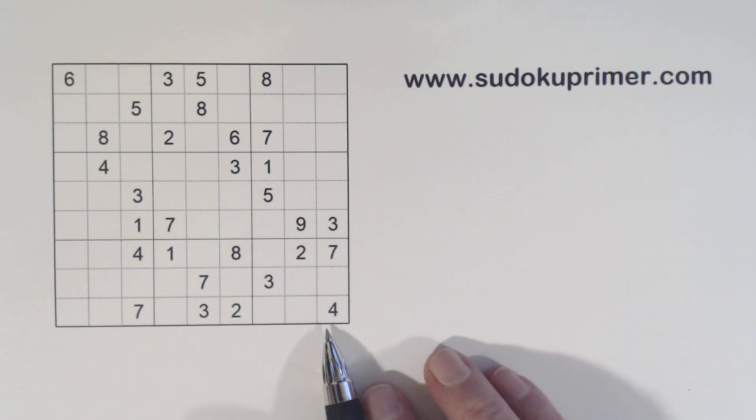This puzzle is a subscriber request. Francis from New Zealand wrote in and requested that I solve this puzzle. Thank you, Francis. This puzzle is rated medium, but it keeps us on our toes and gives us some challenges. We find quadruplets right away, which help us get started. We'll use a number of techniques and patterns to solve this and make it easier.